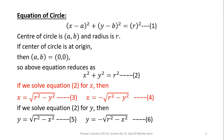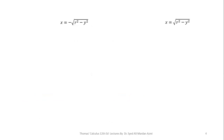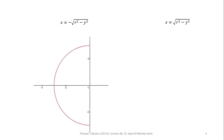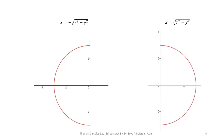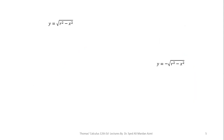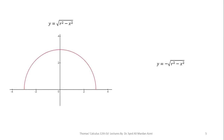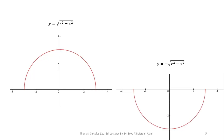Next, we learn which part of the circle is represented by each equation. x equals negative square root of R square minus y square is a semicircle in the left half plane. x equals positive square root of R square minus y square is a semicircle in the right half plane. y equals positive square root of R square minus x square is a semicircle in the upper half plane. y equals negative square root of R square minus x square is a semicircle in the lower half plane.